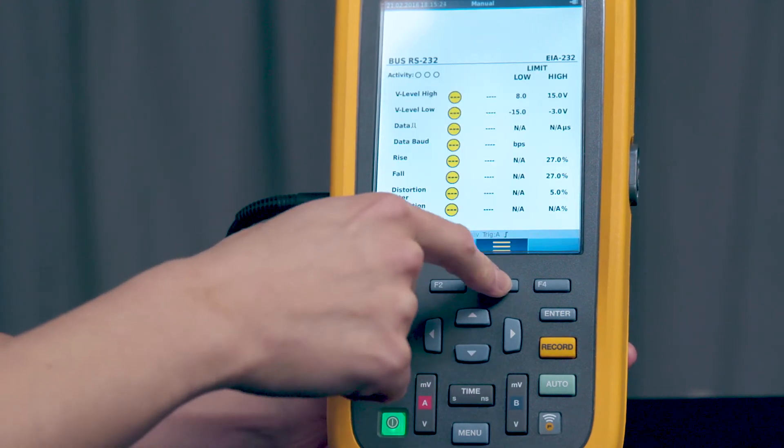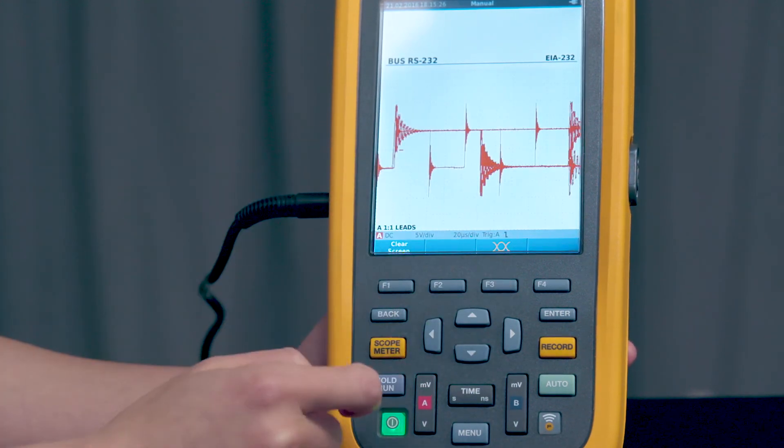And you'll see here in this real-time waveform screen that there's some ringing and there's overshoot. If we press F3 once, twice to get back to the eye pattern, your eye pattern is no longer clean, wide open.